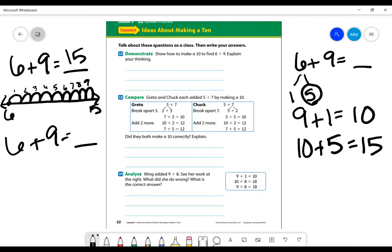So 6 plus 9 equals 15. I can also, what's another strategy I could use? Count on, right? So 6, 7, 8, 9, 10, 11, 12, 13, 14, 15.